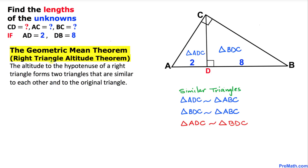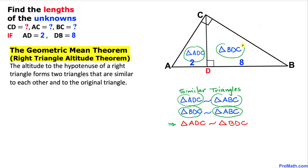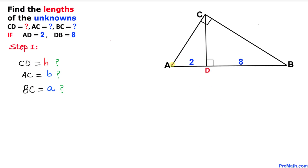According to the right triangle altitude theorem, triangle ADC is similar to the big triangle ABC, and as a result triangles ADC and BDC are similar triangles as well. Keep in mind that this idea is going to help us in our calculations.